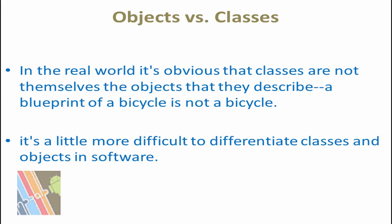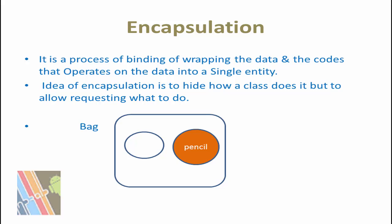Object versus class: in the real world, it is obvious that classes are not themselves the objects they describe — the blueprint of a bicycle is not a bicycle. It is a little more difficult to differentiate between classes and objects in software. In a figure, the class is not shaded because it represents a blueprint of an object rather than the object itself. In comparison, an object is shaded, indicating that the object actually exists and you can use it.